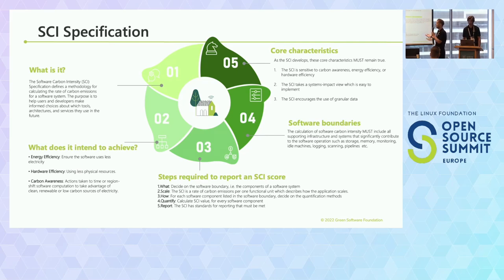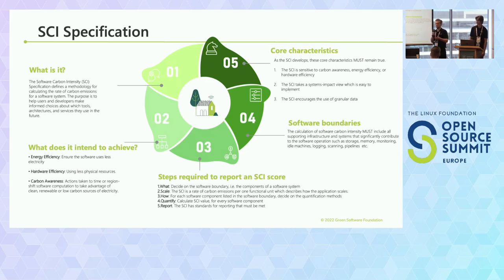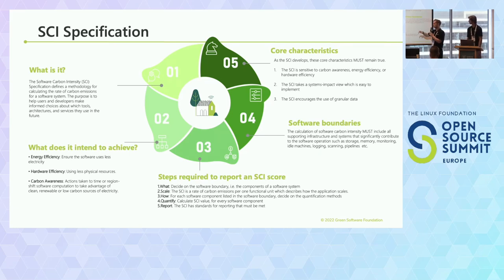The data source needs to be reliable — we need to know how much energy a particular chipset or data service is using. Then you quantify the software carbon intensity for every value within your boundary. The fifth and final step is to report — how are you actually thinking about reporting that back to the user and developers so they can make informed choices. We'll talk a bit more about the type of choices they might make when we go through the projects themselves.